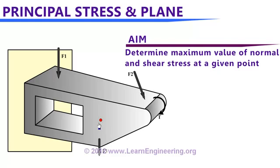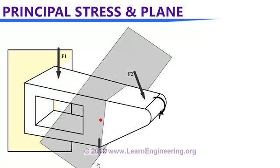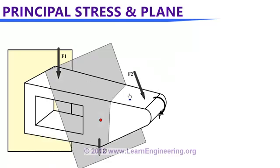Stress is always defined on a plane, so first we will look at planes passing through this point. There could be an infinite number of planes passing through this point, and normal stress values on each plane will be different from one another. But there will be one plane on which the normal stress value will be maximum — that plane will be known as the principal plane, and the normal stress on that plane will be known as principal stress. Similarly, there will be one more plane on which normal stress is minimum — this is also a principal plane, more precisely the minimum principal plane, and the normal stress on that plane is the minimum principal stress.